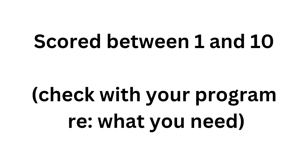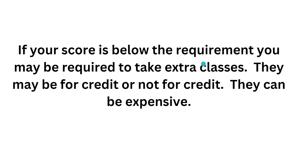The test is scored between one and ten — one is the lowest, ten is the highest. You should check with your program and department regarding what score you need and the consequences of a low score. If your score is below your department's requirement, you may be required to take extra writing classes. These may be for credit or not for credit, and as you know, classes at Columbia can be very expensive. You will be paying for these classes, so I do encourage you to take the test seriously and spend time and effort preparing. It will have an impact on your first year of studies at Columbia.